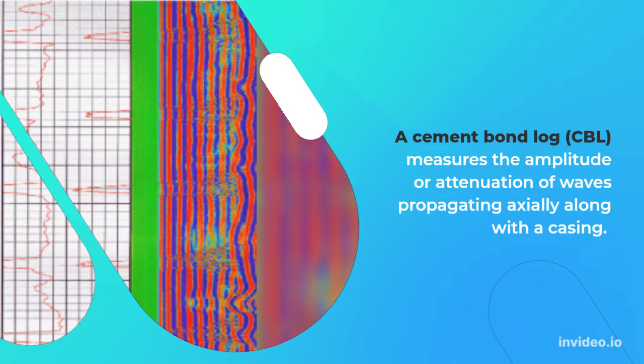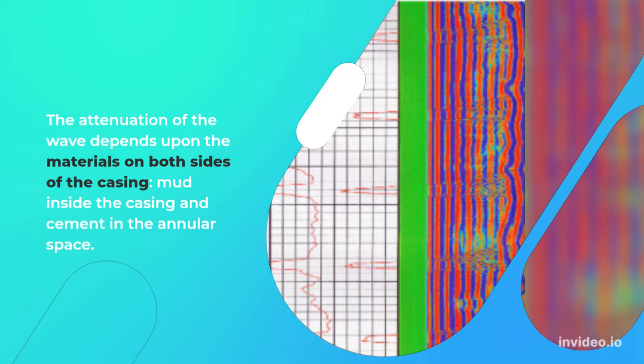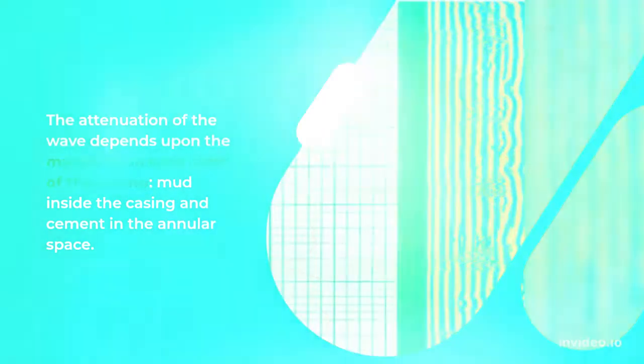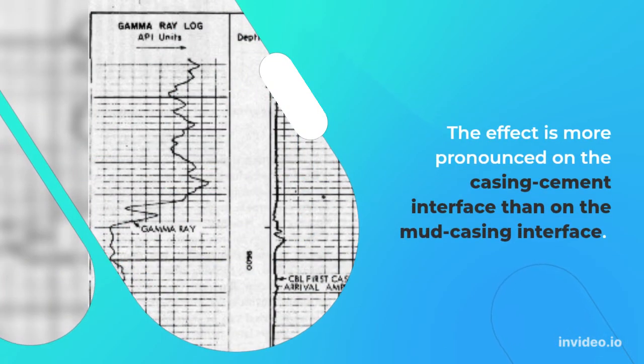A cement bond log measures the amplitude or attenuation of waves propagating axially along with the casing. The attenuation of the wave depends upon the materials on both sides of the casing: mud inside the casing and cement in the annular space. The effect is more pronounced on the casing-cement interface than on the mud-casing interface.